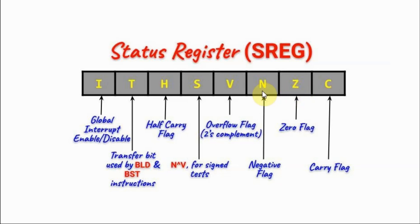The negative flag is set when we have a negative value resulting from subtraction. The overflow flag is set whenever we have an overflow resulting from a two's complement operation. The sign flag is related to signed numbers. The half carry flag is set whenever we have a carry out from a binary coded decimal addition.